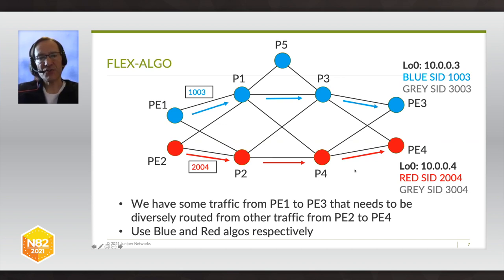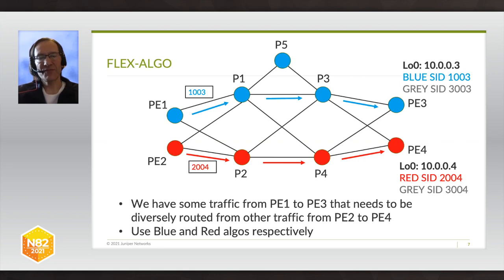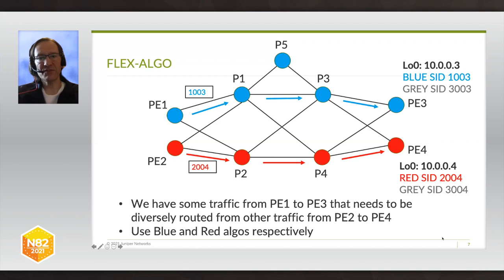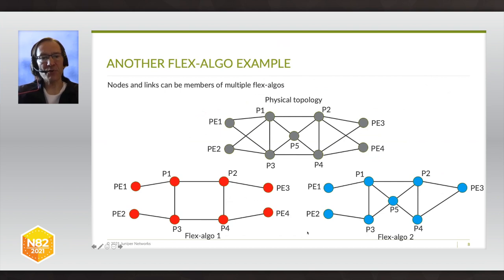This slide illustrates the very first use case of Flex-algo: plane enforcement in a network with two planes. You put each plane into a different Flex-algo, and if you want to confine traffic to a particular plane, you launch it into the corresponding Flex-algo — there's no way it can jump across diagonal crosslinks to the other plane. This is very good for high-availability services where you're deliberately sending duplicate traffic in a live-live fashion, often used for financial market data or broadcast video. In general, a node could be a member of multiple Flex-algos.